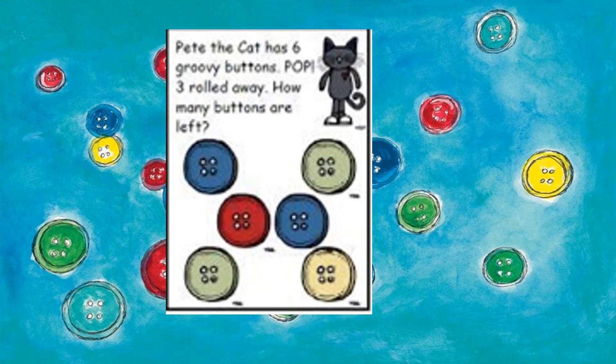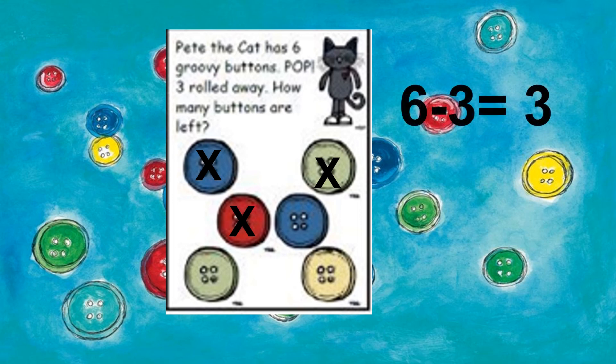Pete the Cat has six groovy buttons. Pop! Three rolled away. How many buttons are left? Let's count. Put your finger. One, two, three, four, five, six. There are six buttons. Three rolled away. Let's X out three buttons. One, two, three. How many buttons are left? Let's count. One, two, three. There are three buttons left. Six minus three equals three. Pete the Cat had six buttons, three buttons popped off, so now he has three buttons left.